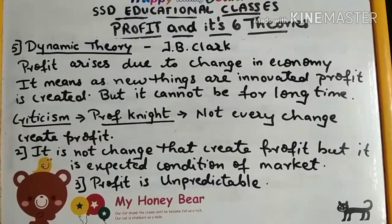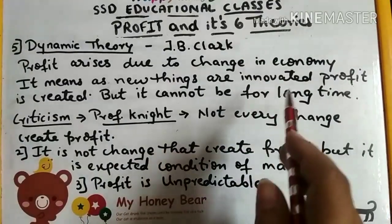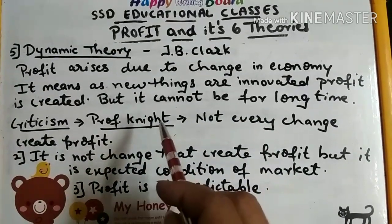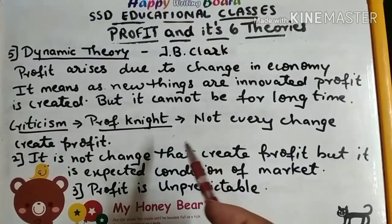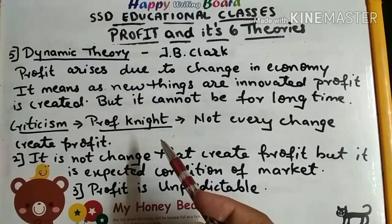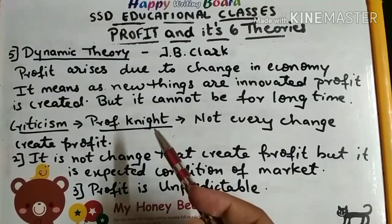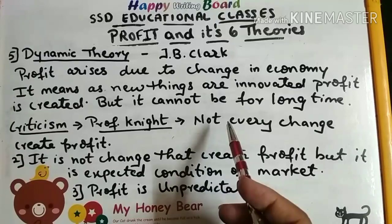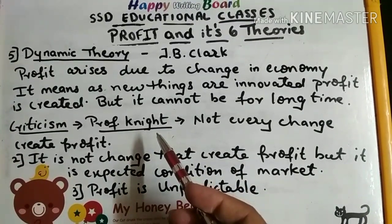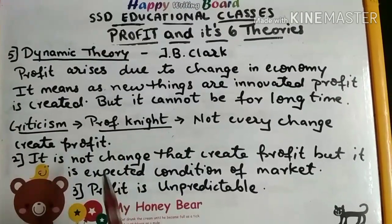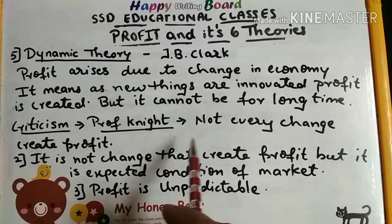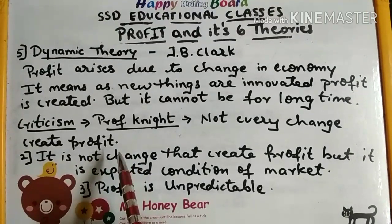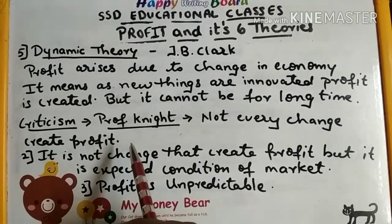The next theory is the Dynamic Theory, given by J.B. Clark. He said profit arises due to change in the economy. As new things are innovated, profit is created, but it cannot last for a long time. When a firm introduces a change, it earns profit, but as other firms adopt the same change, the profit disappears.